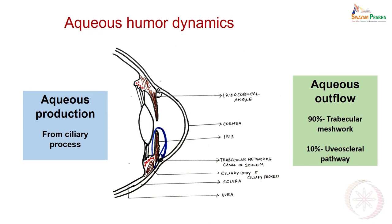There are three cardinal signs of Glaucoma. One is the increased intraocular pressure. The second is headache because the optic nerve is pressed behind. Third is vomiting or nausea, and many times colored vision. This causes continuous pressure on the optic nerve and there is progressive damage.